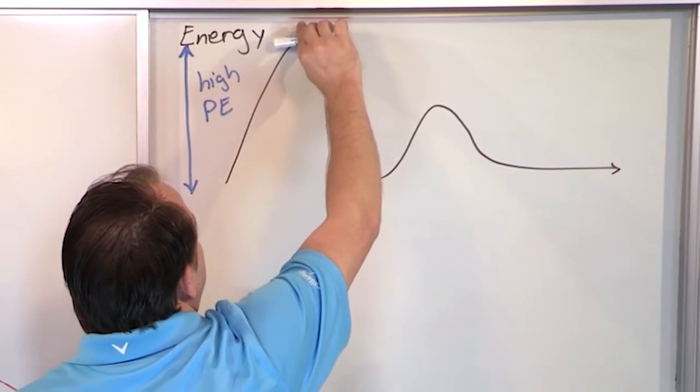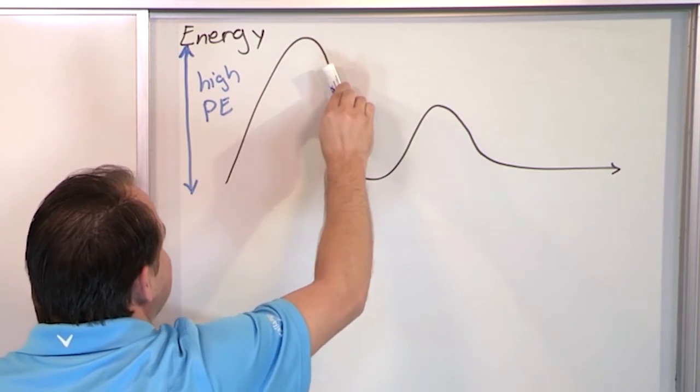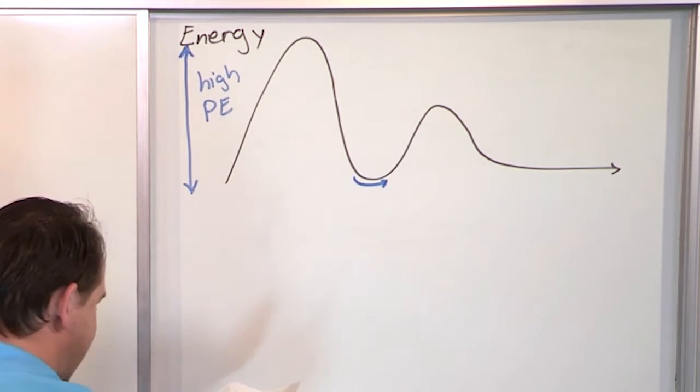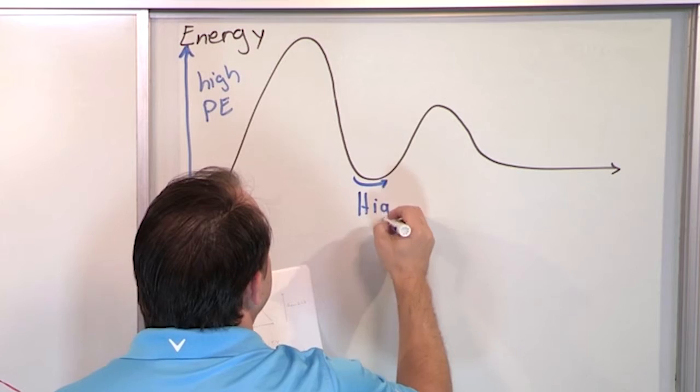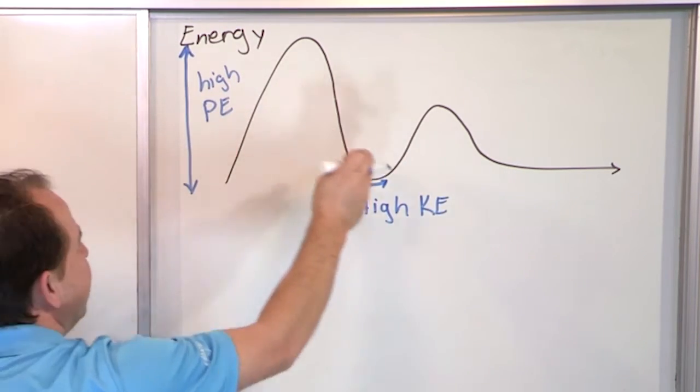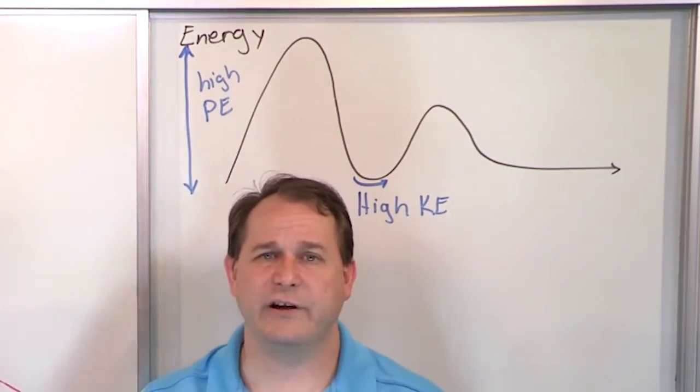So what happens is the roller coaster goes to the very bottom and all of that potential energy you have because you're accelerating, when you get to the very bottom here, when the roller coaster starts to round the bottom down there, we say that we have a high kinetic energy. So we're going to learn a lot about potential energy and kinetic energy. Kinetic energy is how fast you're moving. It's the energy of motion.